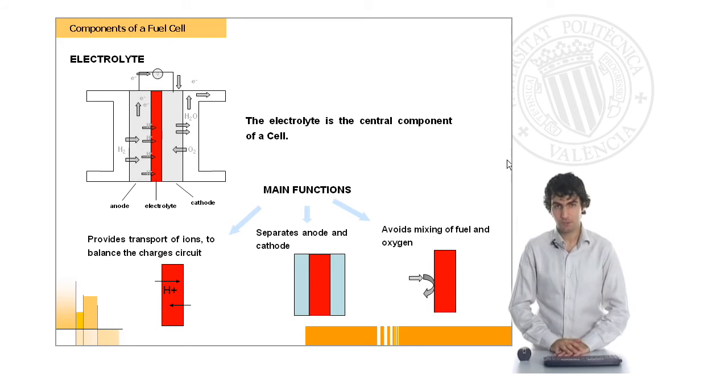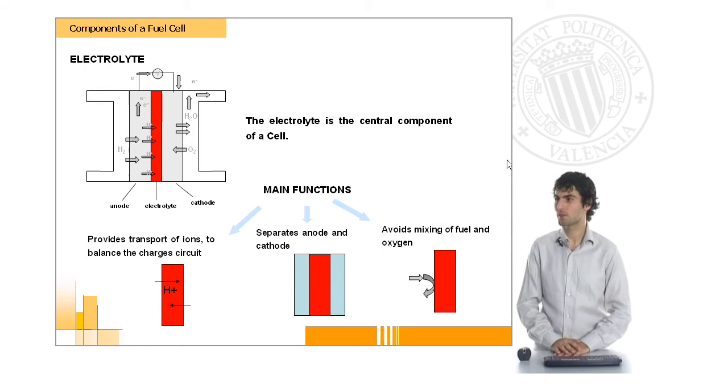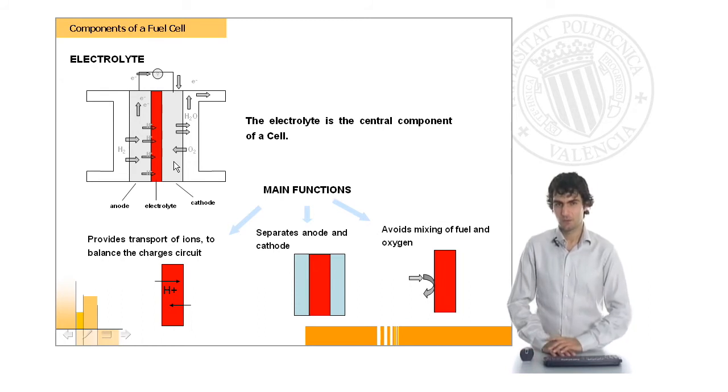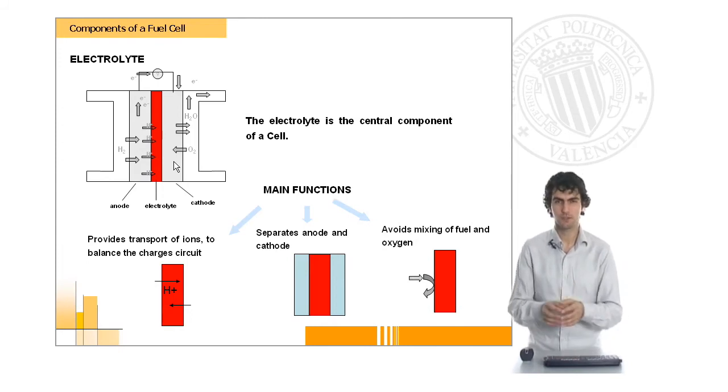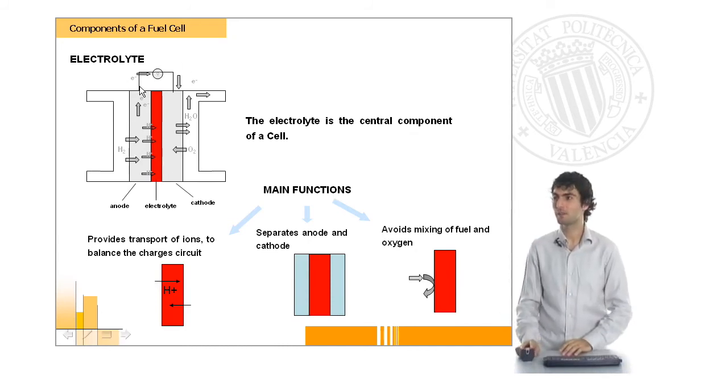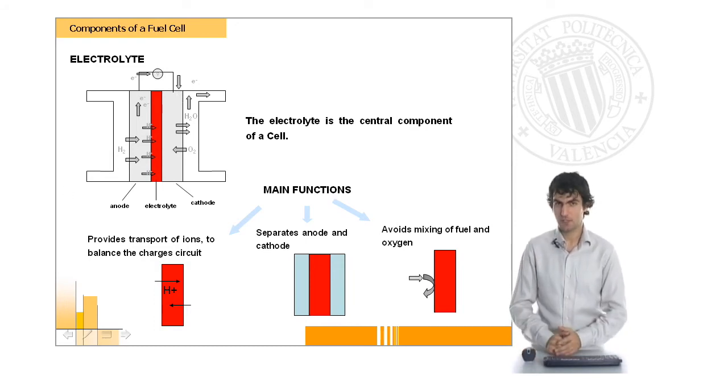On the other hand, the electrolyte is also a very important part of the unit cell because it must separate both anode and cathode. You have to remember that in this kind of reactions in fuel cells it is very important that oxidation and reduction take place separately so that there can be a flux of electrons through an external circuit. This is the main function of electrolyte.